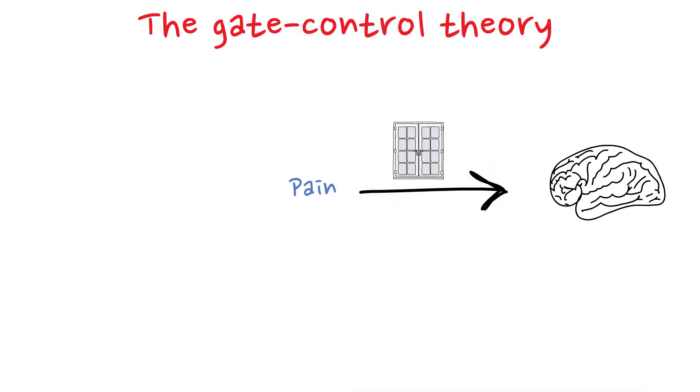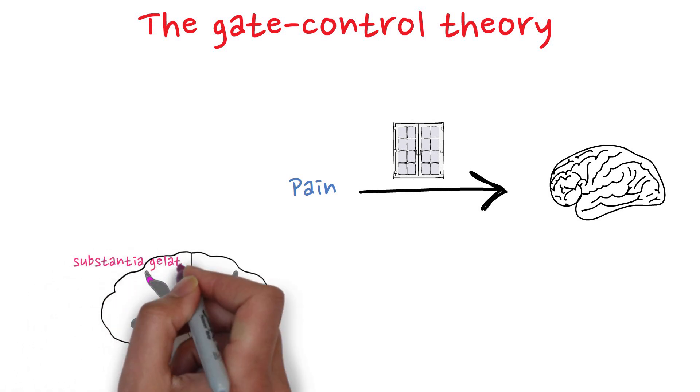thereby modulating incoming pain signals before they reach the brain. The theory proposes that the gating mechanism is located in the spinal cord, more specifically, in the substantia gelatinosa of the dorsal horns.